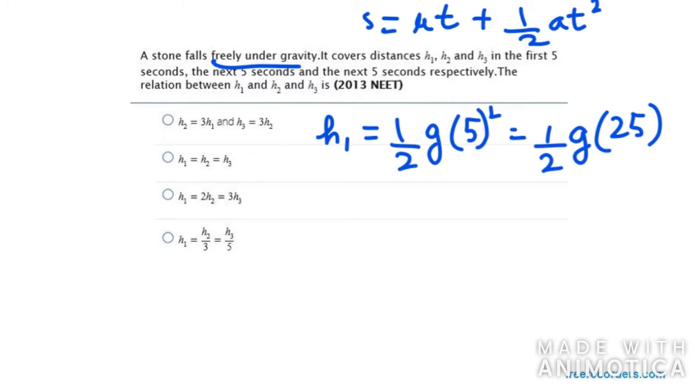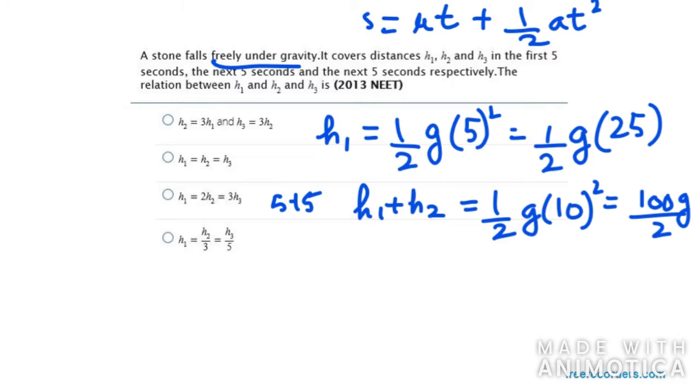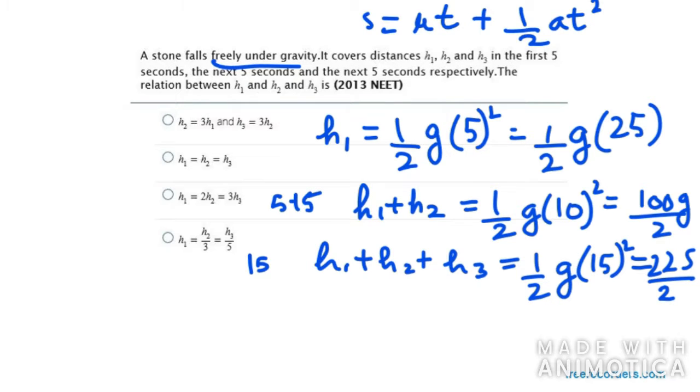For the second half, it will be 10 seconds. 5 plus 5 will be 10. So I will take it as h1 plus h2. This will be half g times 10 square, that means 100g over 2. Then for the next 5 seconds it will be 15 seconds. I will be considering h1, h2 and h3. So this will be half g times 15 square, that is 225 over 2g.